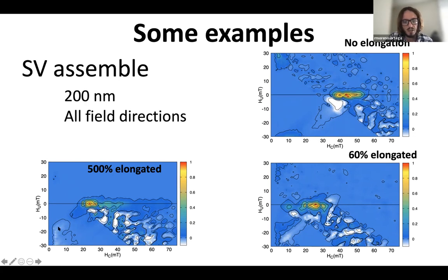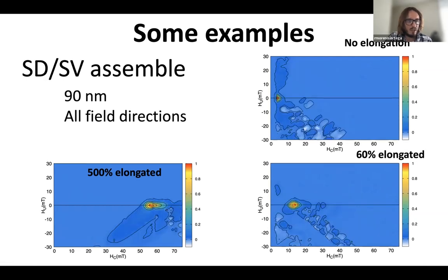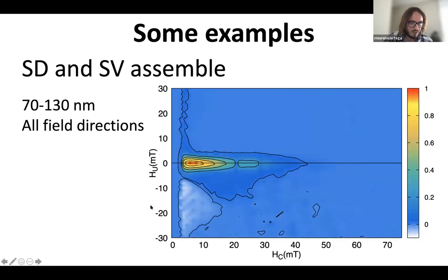Another example is the transition from single domain to single vortex particles. Here is the non-elongated particle where the single domain and single vortex coexist, and as we start increasing elongation we recover again the single domain.